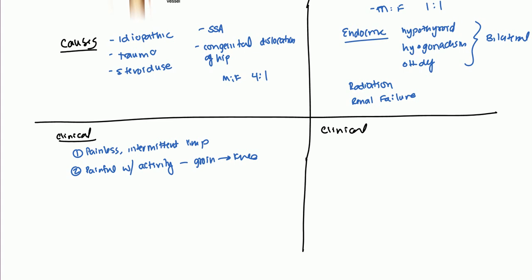However, in slipped capital femoral epiphysis, generally the situation is going to be an obese kid, and they have pain. It starts off with pain, and they describe it as a dull, aching pain, and again, anywhere from the groin all the way to the knee. So it could be the thigh and the hip area as well. And this as well is going to be increasing with physical activity.